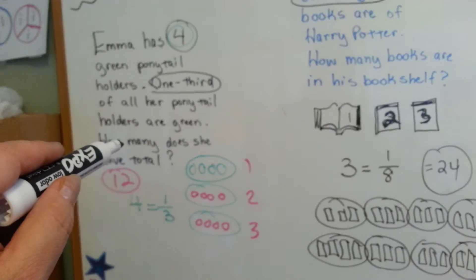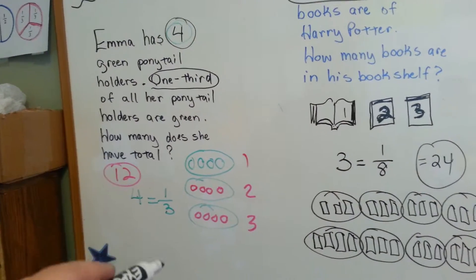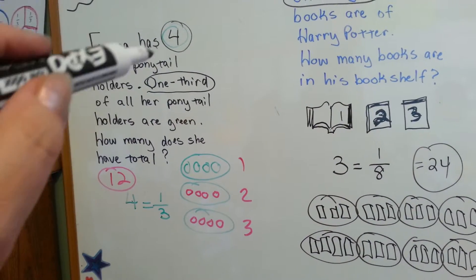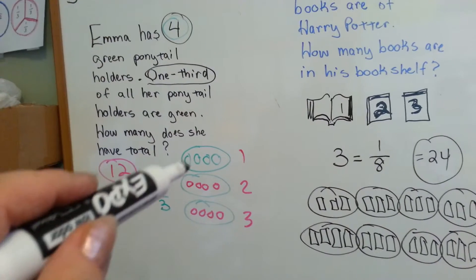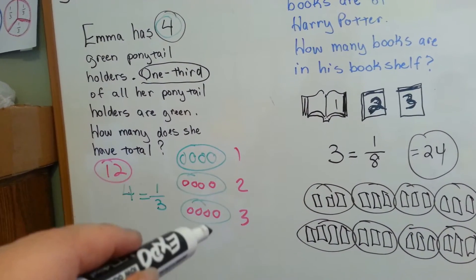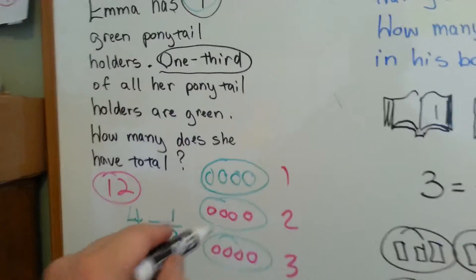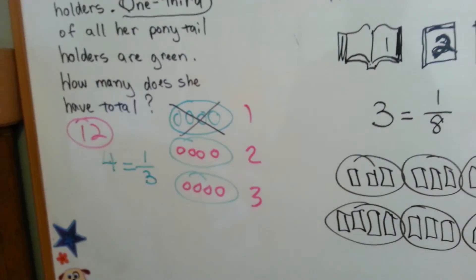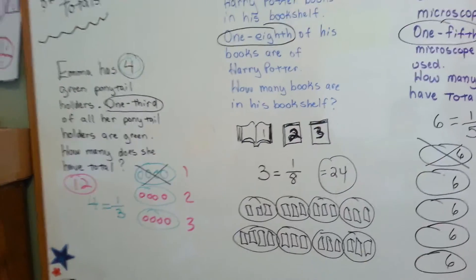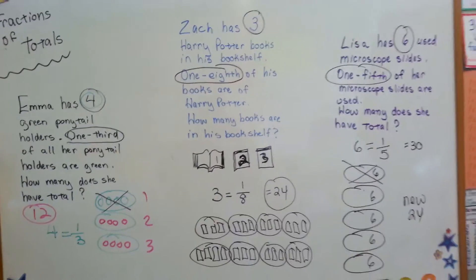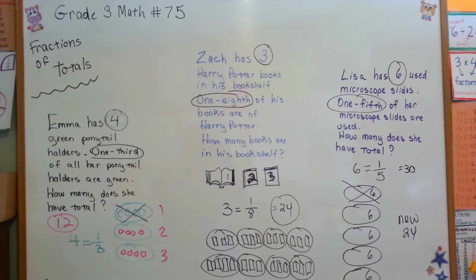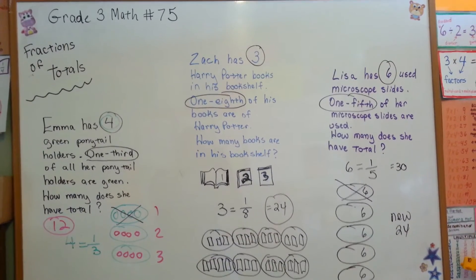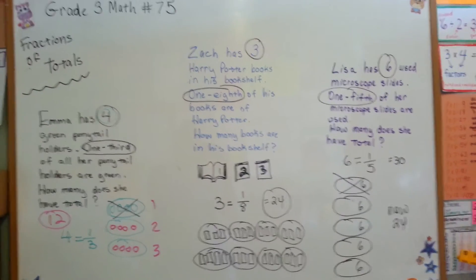You could even do it with this one. If you wanted to find out how many of the other colors that she had that weren't green, you would figure that four was one-third of them, and you would do just like we did. And then you would subtract the four that were green, and you would know that she had eight that were not green. And just take it in steps. Not that hard to do. You can do it. That's how you find a fraction of a total or whole amount.